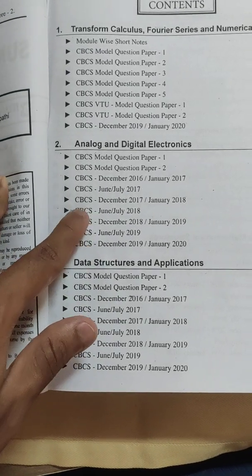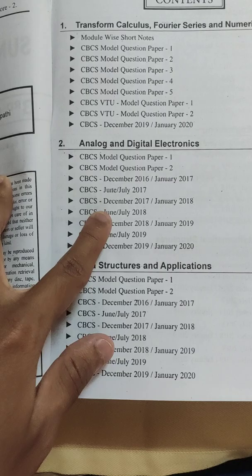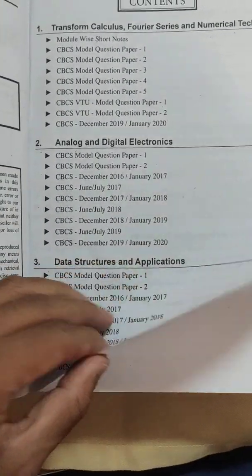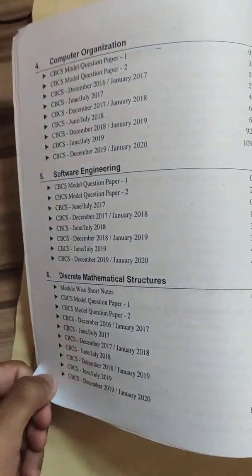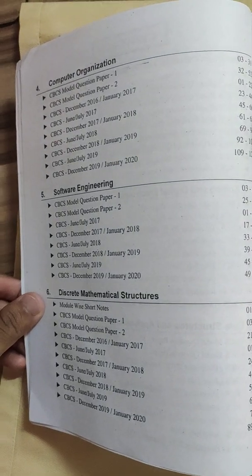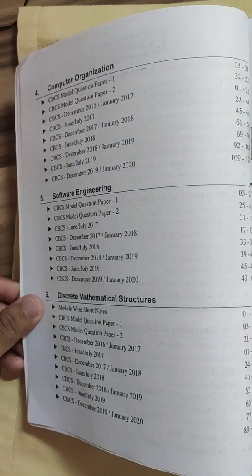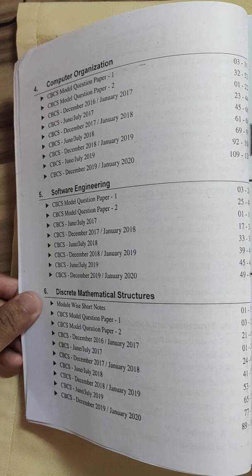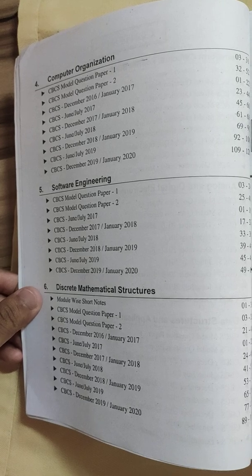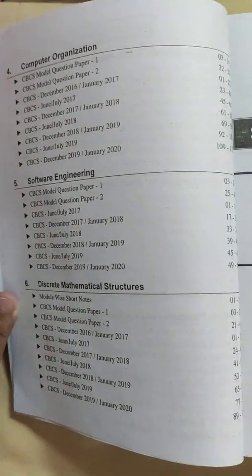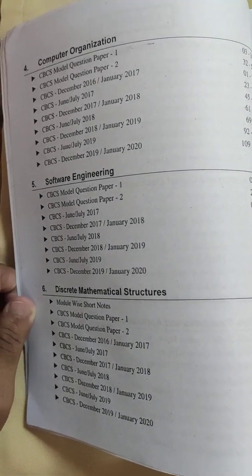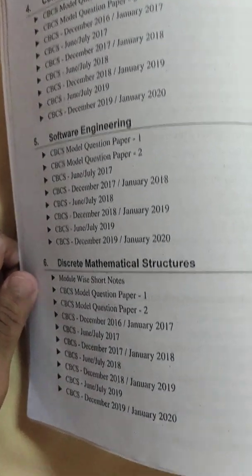Logic and digital electronics. Here we are getting enough papers, around 7 papers. The reason is there have been only minor changes in this. In one module, say example chapter A is there, in the new scheme the chapter A is shifted to another module. Previously it was in module 1 so in the next scheme it got changed to module 2. Little bit slight differences are there.